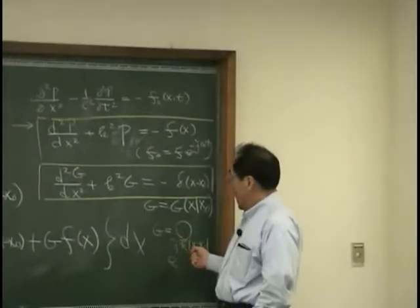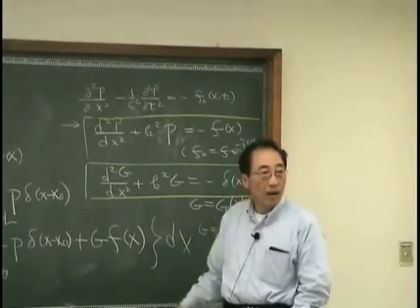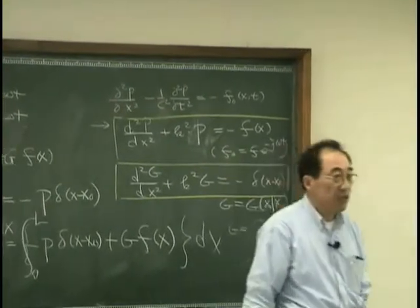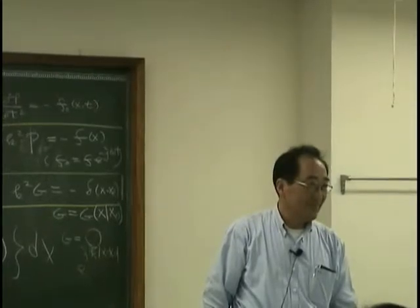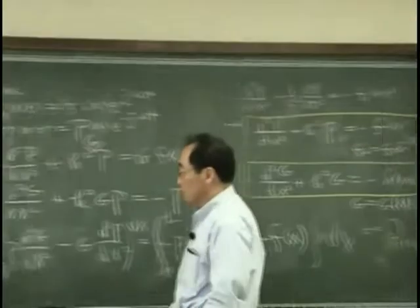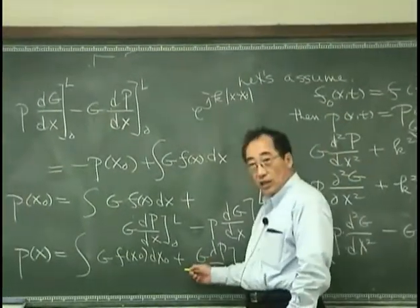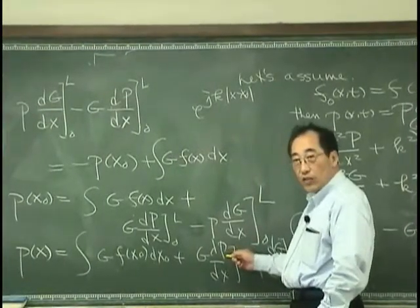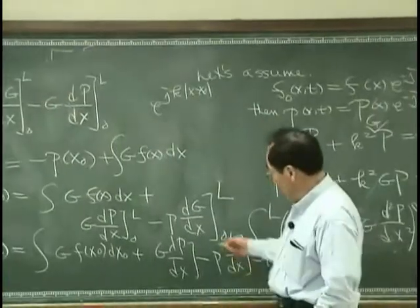So, I can use this, or I can use another Green's function. There is some freedom to select Green's function. So, one could select G, that is zero, on X equal zero and X equal L. And I can remove this term.